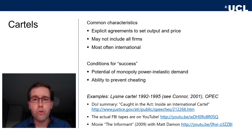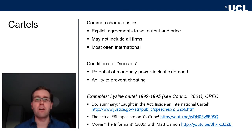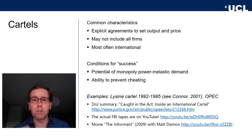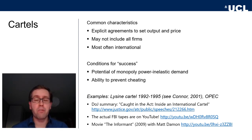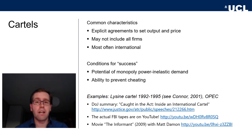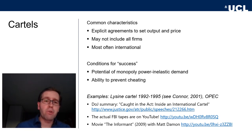The most extreme form of collusion in oligopolistic markets is the formation of a cartel — a stable agreement between producers to fix prices, split the market, and engage in anti-competitive behaviors, usually against their consumers. This may be familiar from the idea of drug cartels, like the Cali cartel in Colombia. Producers get together, set prices, and carve up territory — exactly what you see if you watch Narcos on Netflix, which is basically a business case study for how to set up a cartel.